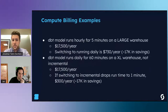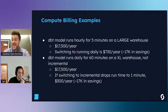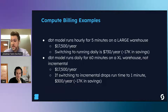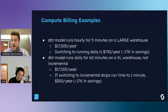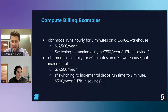Given a contract rate of $3 per credit, a dbt model that runs hourly for 5 minutes on a large warehouse can add up to $17,500 a year. If you switch this to a daily job, that can return nearly $17,000 in savings. The main takeaway is to think carefully about which workloads you run at higher frequencies - costs very quickly compound, especially for larger warehouses, and you end up paying a lot for idle time. Ask yourself: do you really need to run this dbt model every hour?